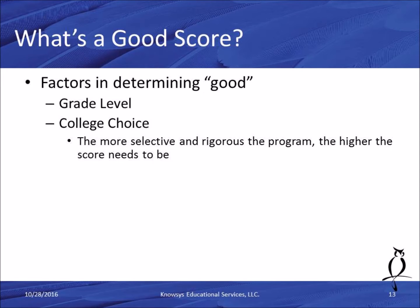The second factor is college choice. The more selective and rigorous the program you're applying to, the higher your score needs to be. What makes a good score depends on where you want to go to college — that answer is different for everyone. Top 90th percentile scores are good scores wherever you're applying, but otherwise look for the average of students who actually got admitted to your target university — you can find that at collegeboard.org.